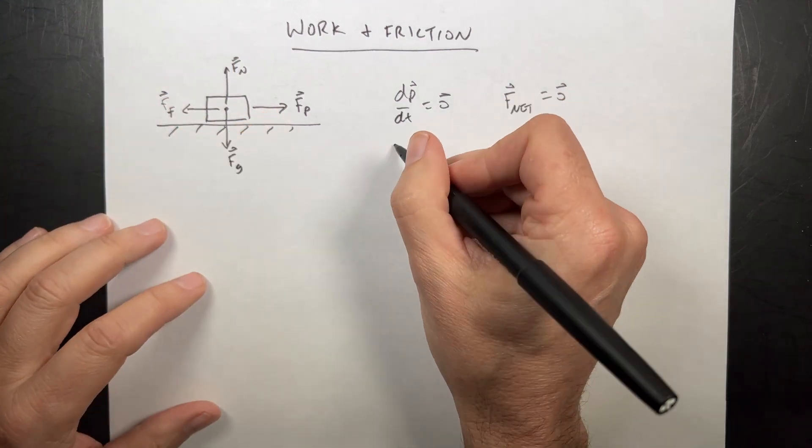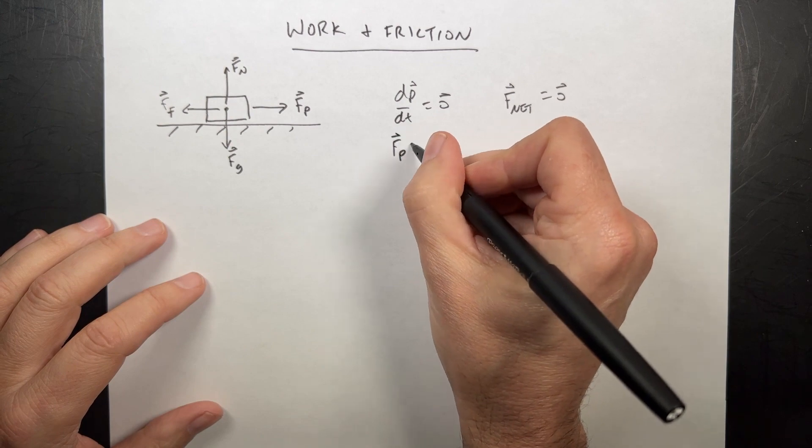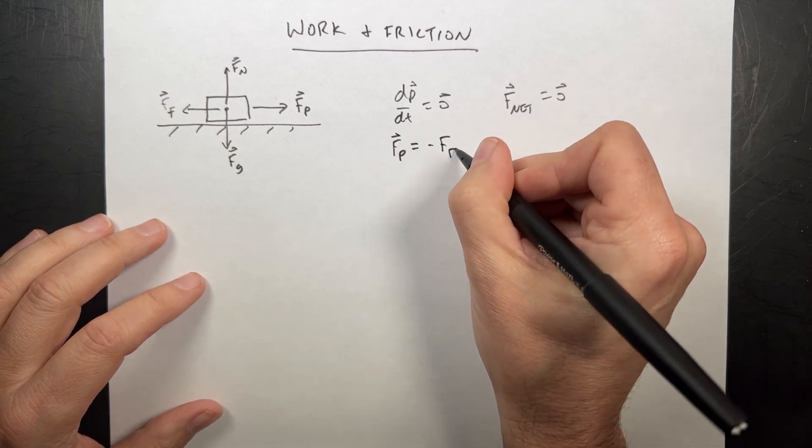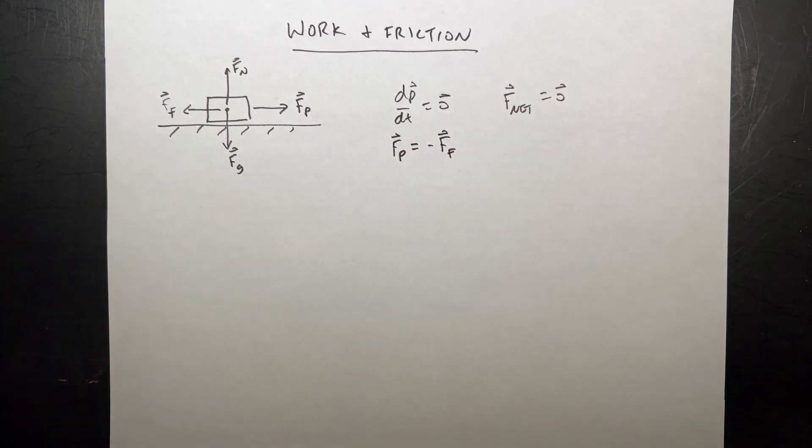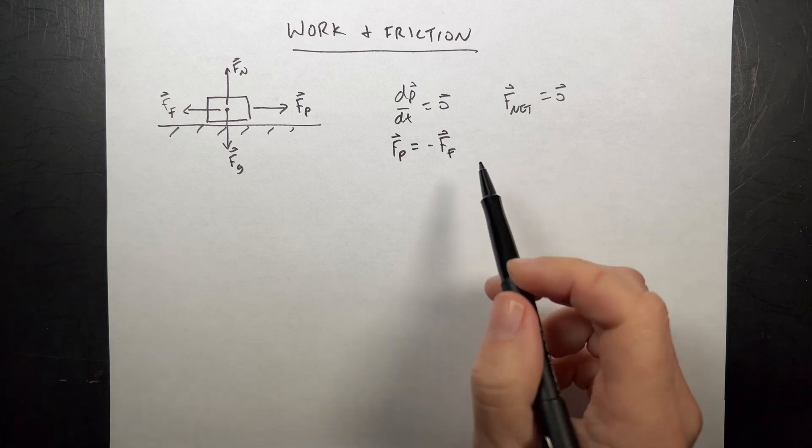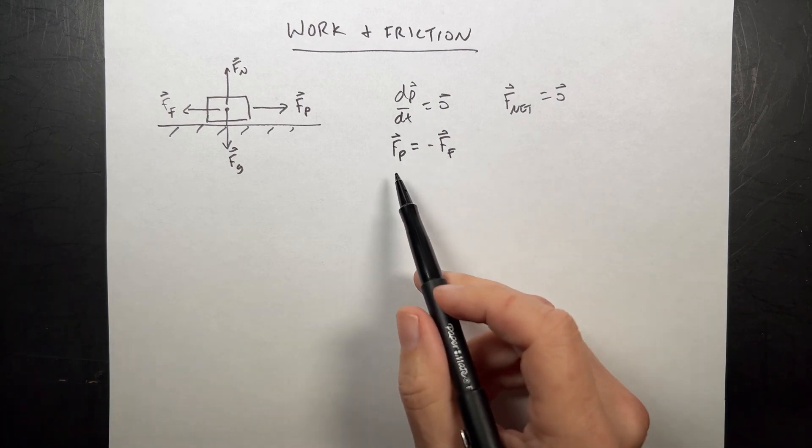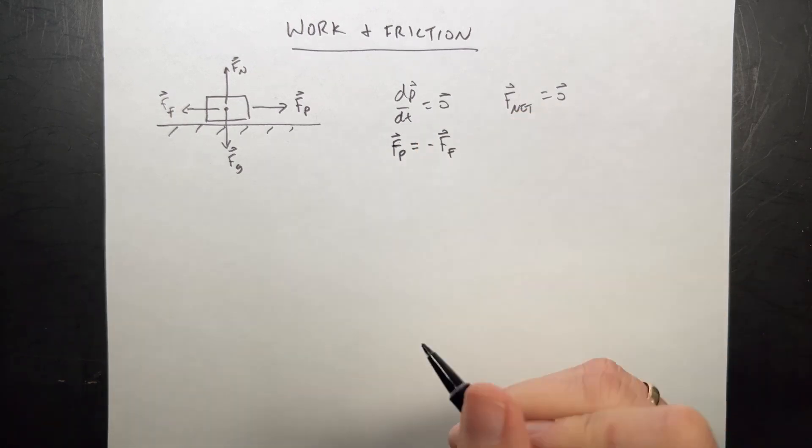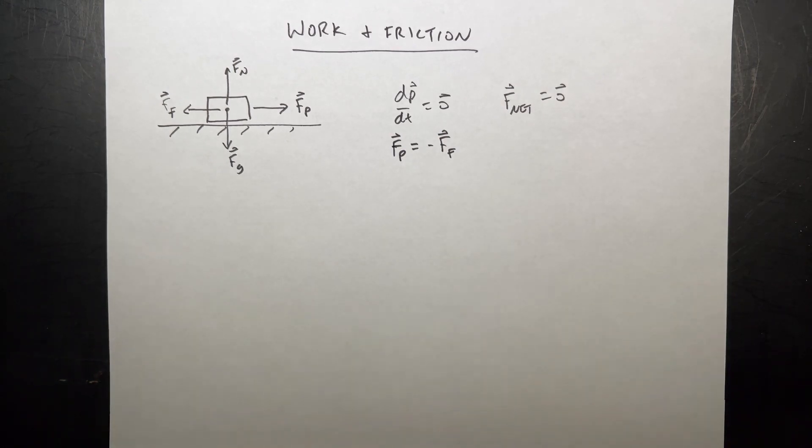But that means that Fpush has to be equal to negative Ffriction. I know that from momentum because I know that the change in momentum is zero, so those two forces have to be equal and opposite. Done. I already know that. Very easy.